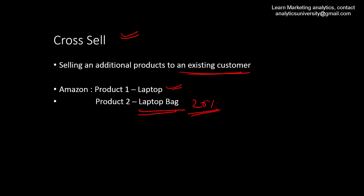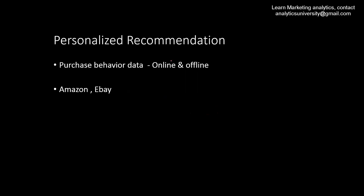In cross-selling, the products should be related and bought at roughly the same time. That's how it differs from repeat purchase, which occurs at a different point in time. The third project type is personalized recommendation, or a recommendation engine. This can be applied in the retail industry where you have tons of data from both online and offline purchases — customer behavioral data and purchase behavior data from both channels.